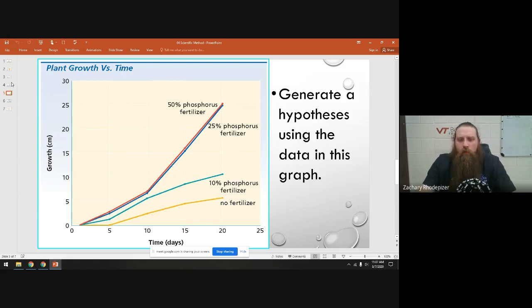When we look at this graph, we're looking at the effect of this fertilizer on plant growth. We can see that with no fertilizer—our control group—the plant does grow, it gets about five centimeters tall. With 10% fertilizer, we just double that to about 11 centimeters. And then we see that 25% fertilizer and 50% fertilizer both result in about 25 centimeters of growth.